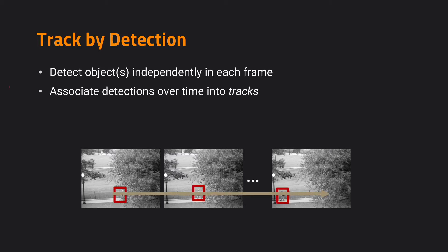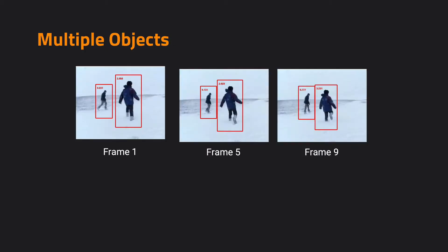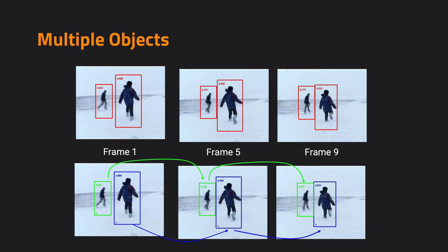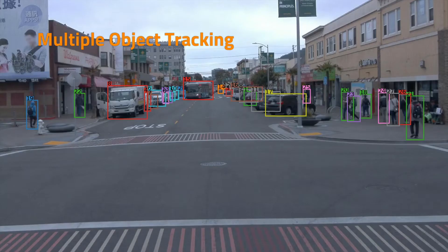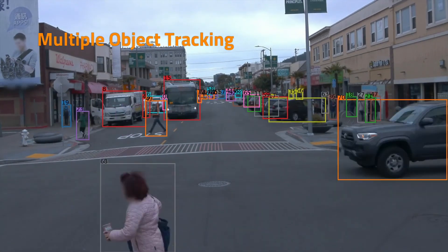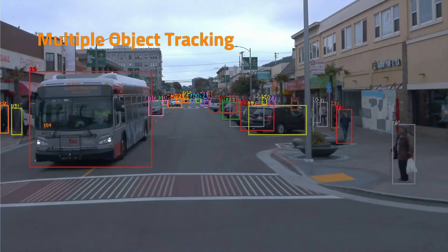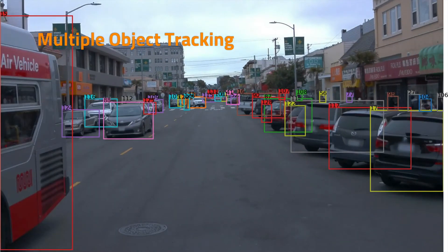In this case, we first detect objects and associate them together over time into tracks. Across time, we want to detect and track the target object. We may have multiple objects in the track, which makes the problem much more challenging. Say we have two persons in this video — our task would be to detect both persons in all frames and at the same time associate them correctly. We may even need to deal with more than 10 or 20 objects within a frame and track all of them together.